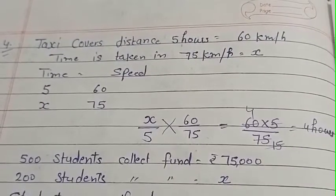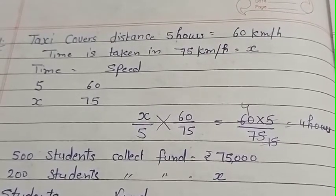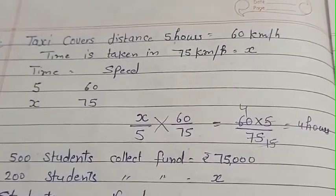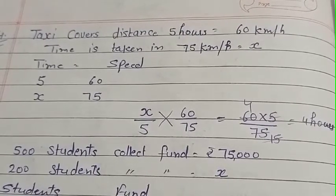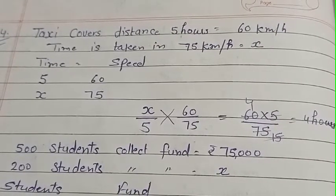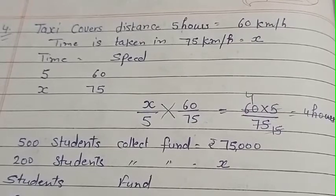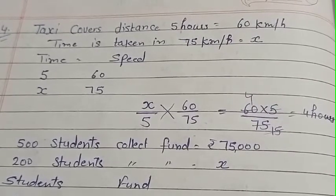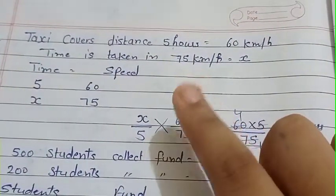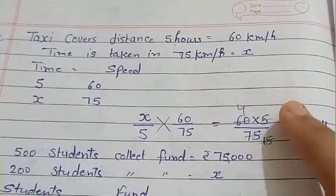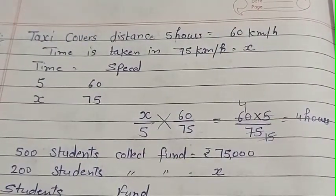Fourth question: a taxi covers a distance in 5 hours at 60 km per hour. At which speed does it take if the speed is 75 km per hour? So time 5 upon x, speed 60 upon 75. If speed increases, time is less. Cross multiply: x equals 60 multiplied by 5 upon 75. We simplify: 5 will cut to give 4 hours.